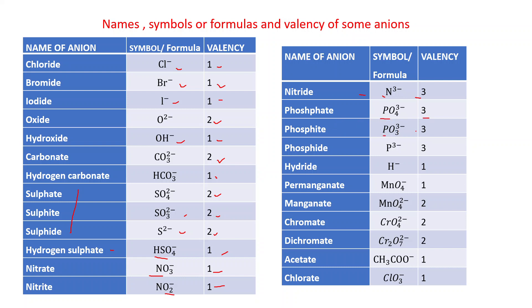Phosphite: PO3 3-, valency is 3. These look similar — phosphate is PO4 3- and phosphite is PO3 3-. Hydride: H-, valency is 1. Permanganate: MnO4-, valency is 1. Manganate: MnO4 2-, valency is 2. Chromate: CrO4 2-, valency is 2. Dichromate: Cr2O7 2-, valency is 2. Acetate: CH3COO-, valency is 1. Chlorate: ClO3-, valency is 1.